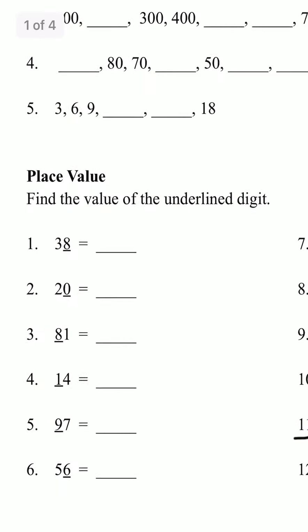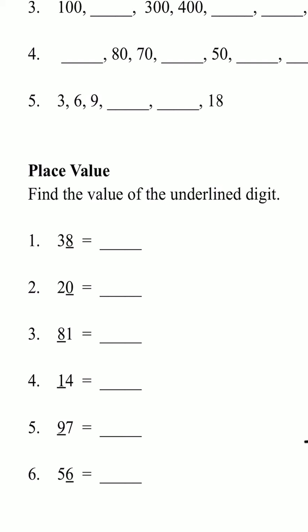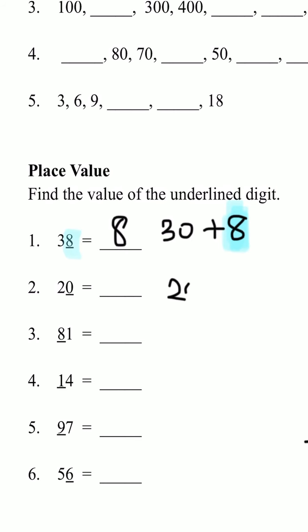Place value. Find the value of the underlined digit. To do this easily, we're going to write the numbers in expanded form. So 38 is 30 plus 8, meaning that it has three 10s and eight 1s. And the underlined number is 8, which is 8 ones, so that would be 8. Now for number 2, we have 20. 20 in expanded form is 20 plus 0 — two 10s and zero 1s. 0 is underlined, so the answer would be 0. The value would be 0.